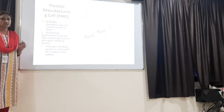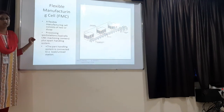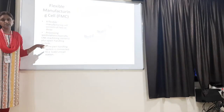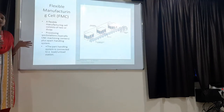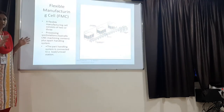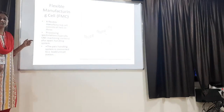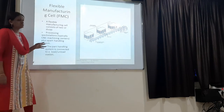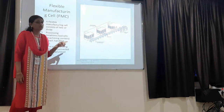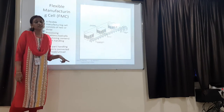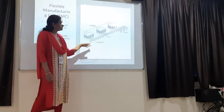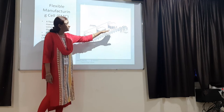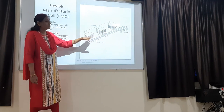The second type is the flexible manufacturing cell. If a manufacturing unit consists of two or three CNC machines at one place, that system is known as a flexible manufacturing cell. Pallets are used to move material from one station to another whenever required.